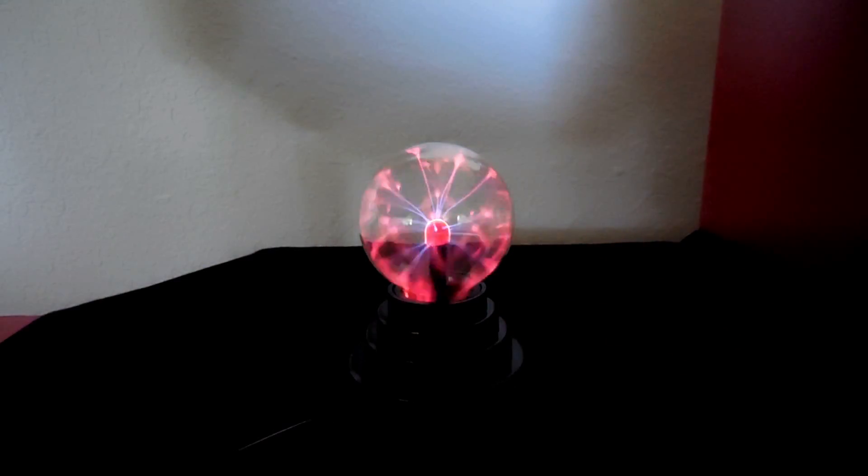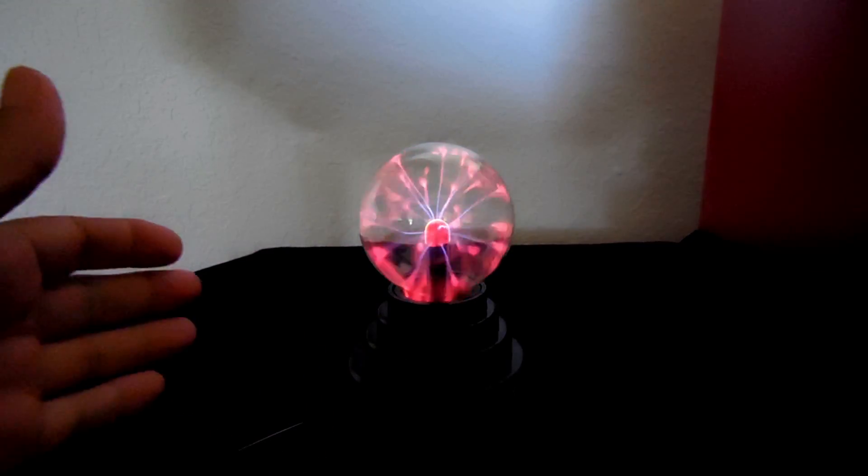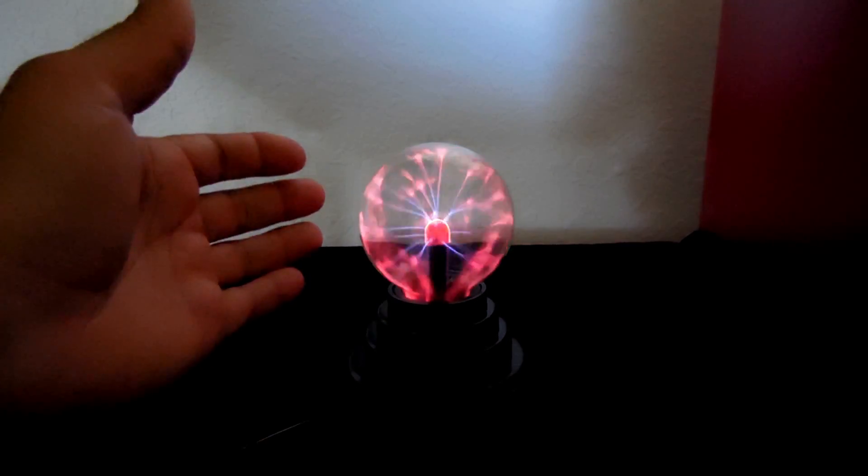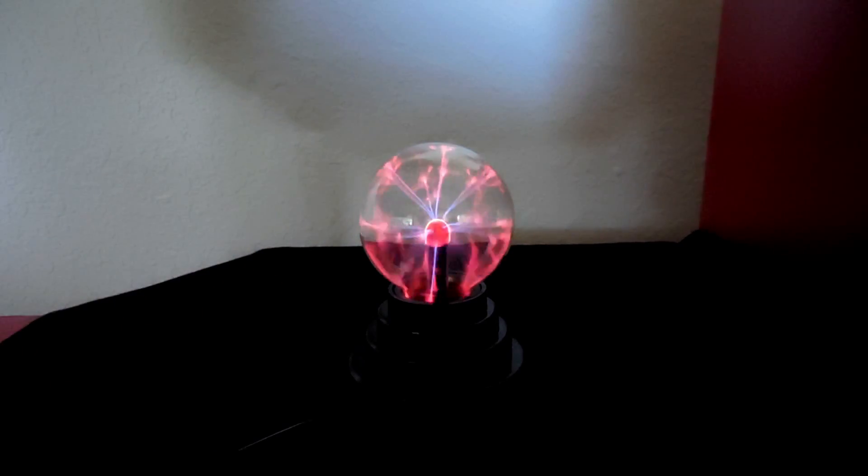Now I'm going to take a small neon lamp like you see right here. I'm going to hold it in close proximity to the globe to demonstrate that the electric field coming off of the plasma globe extends out much further than you see right here.